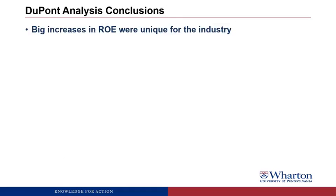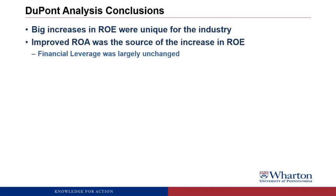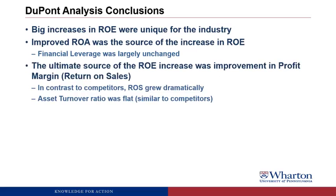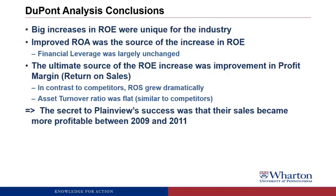To wrap up, what we learned from the DuPont analysis is that the big increases in return on equity were unique for the industry — Plainview was clearly doing something the rest of the industry was not able to do. Plainview's improved ROA was the source of its increase in ROE — it improved through actually operating the company more efficiently, not just levering up. The ultimate source of the ROE and ROA increase was improvement in profit margin and return on sales. In contrast to its competitors, Plainview's return on sales grew dramatically. Asset turnover was fairly flat, similar to competitors. The whole secret to Plainview's success was that their sales became more profitable between 2009 and 2011.